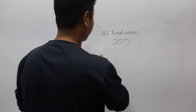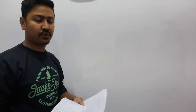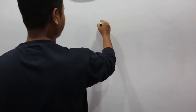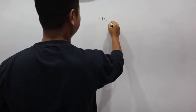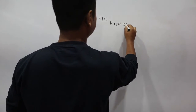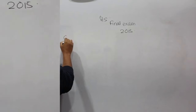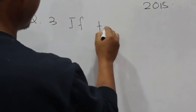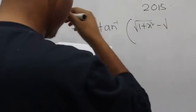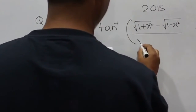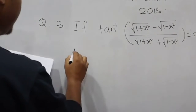This is the final exam in 2015. The question involves the inverse trigonometric function. Equation number 3: if tan inverse of the quantity square root of (1 plus x squared) minus square root of (1 minus x squared), divided by square root of (1 plus x squared) minus or plus square root of (1 minus x squared), is equal to alpha, then prove that...